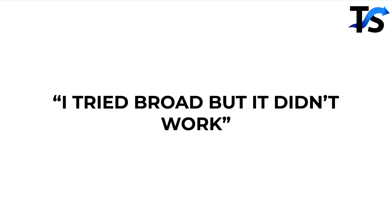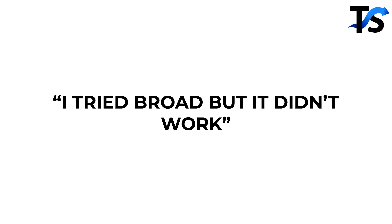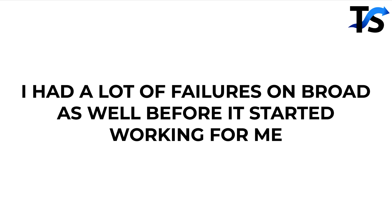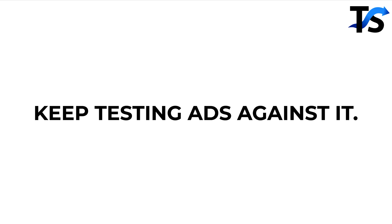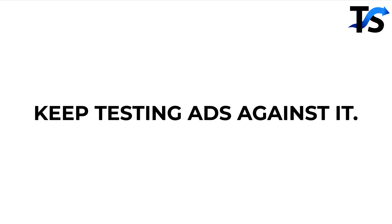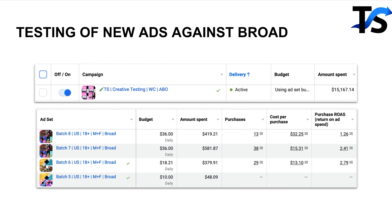I tried broad but it didn't work — I know that's what a lot of you are thinking. Look, I had a lot of failures on broad too before it started working for me. I was against it for a while, then I started seeing successes, and now I'm fully broad. Essentially, you have to test a lot of ads against it. You do not use any other audiences — just go broad, keep testing new ads against it. Here you can see a simple creative testing campaign where each ad set is a new or existing angle, all against broad. You can clearly see which ones are winners and losers, and once you find your winning ads, move them to your scaling campaign.